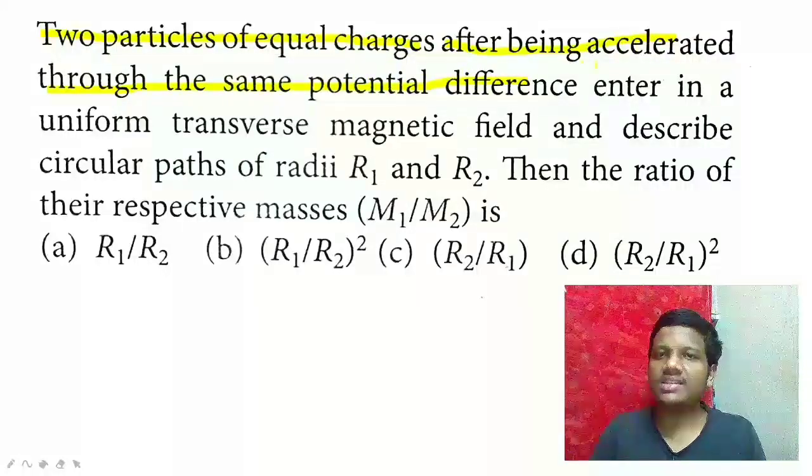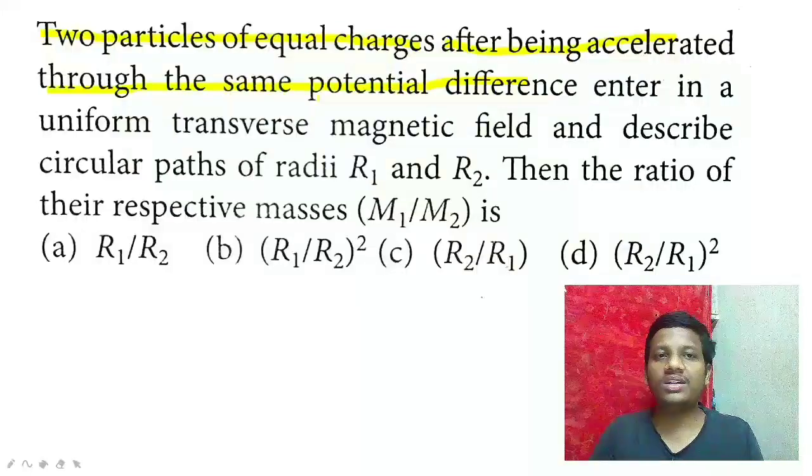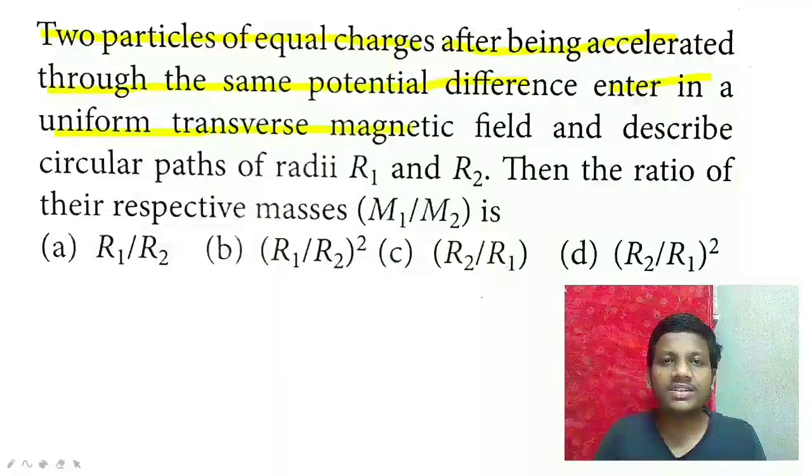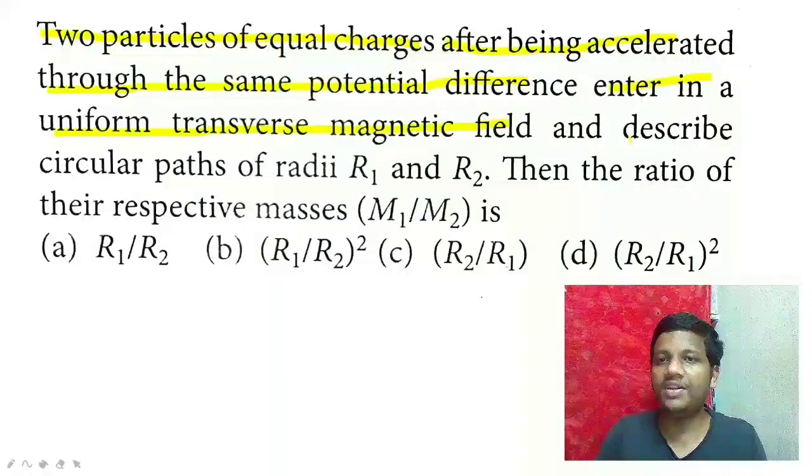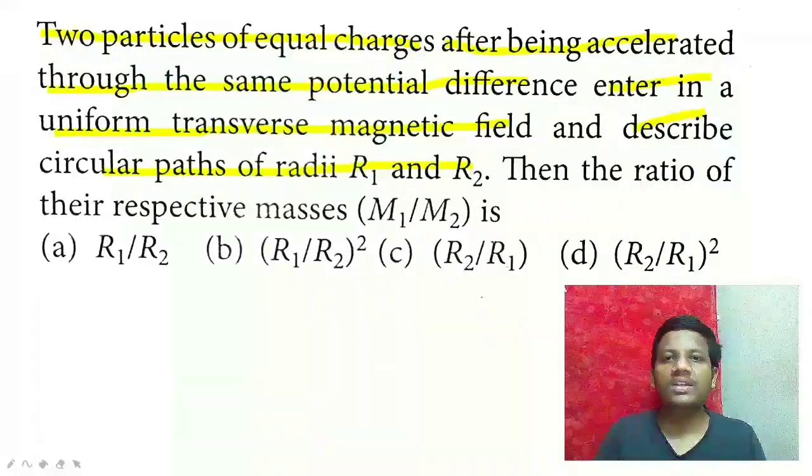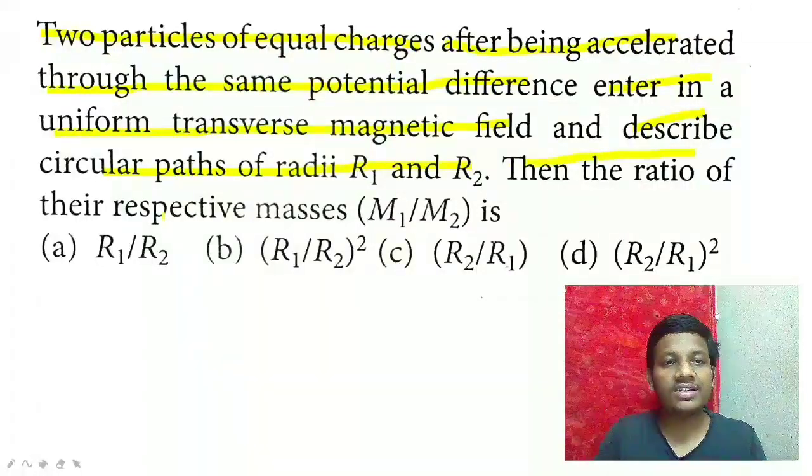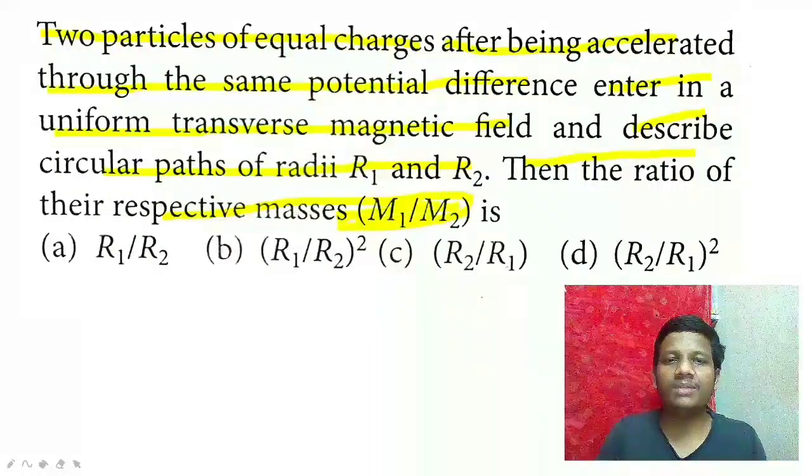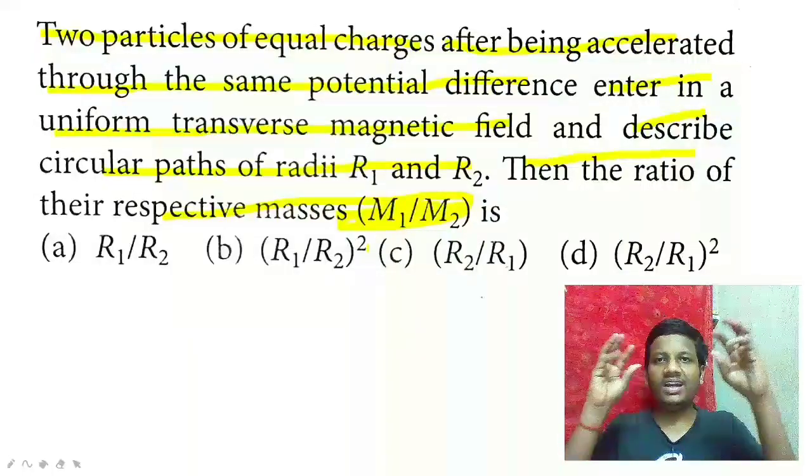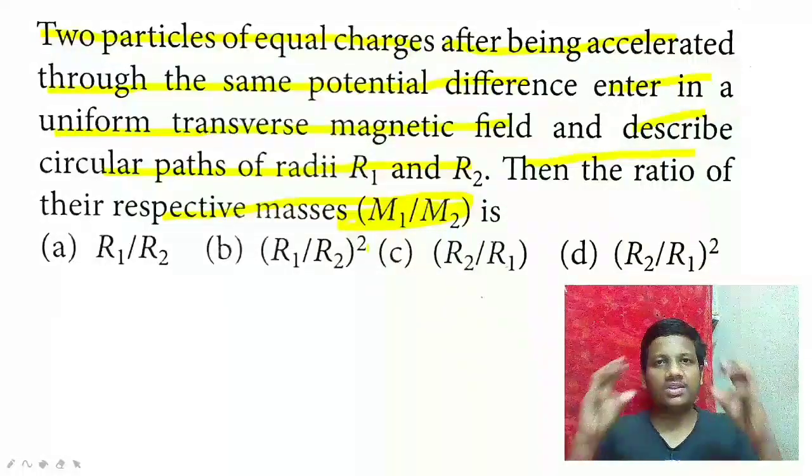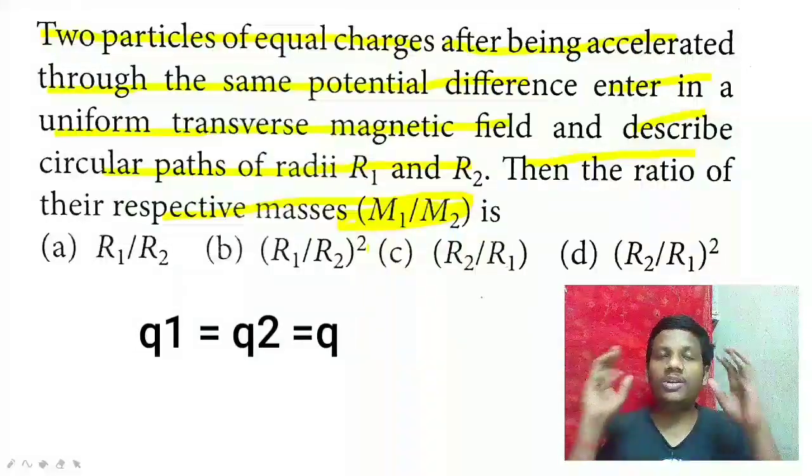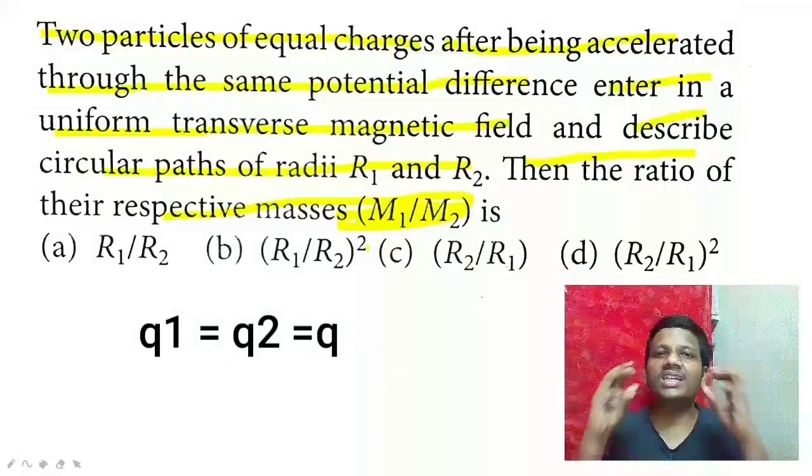Two particles of equal charges after being accelerated through the same potential difference enter a uniform transverse magnetic field. They describe circular paths of radii R1 and R2. Since both particles have equal charge, q1 equals q2, which we can commonly write as q.